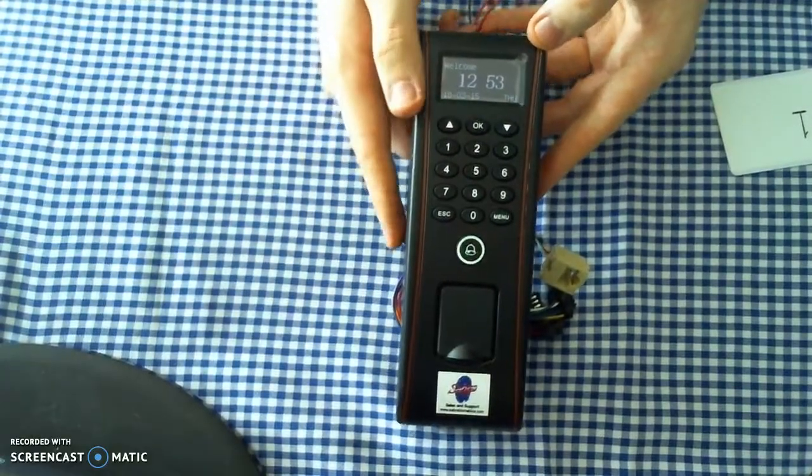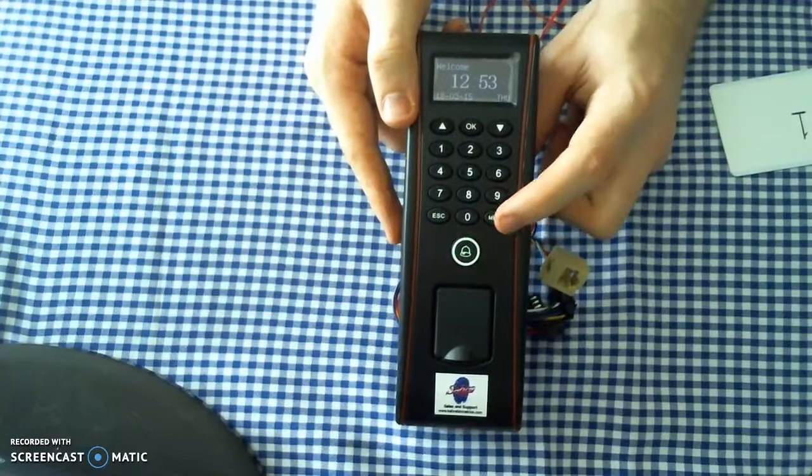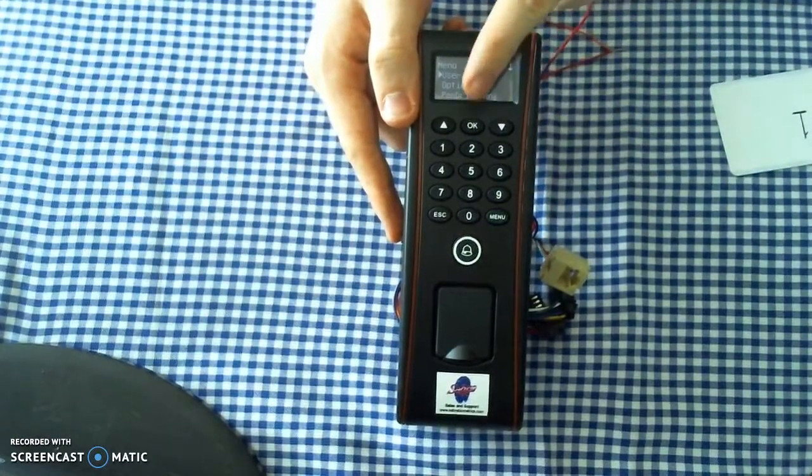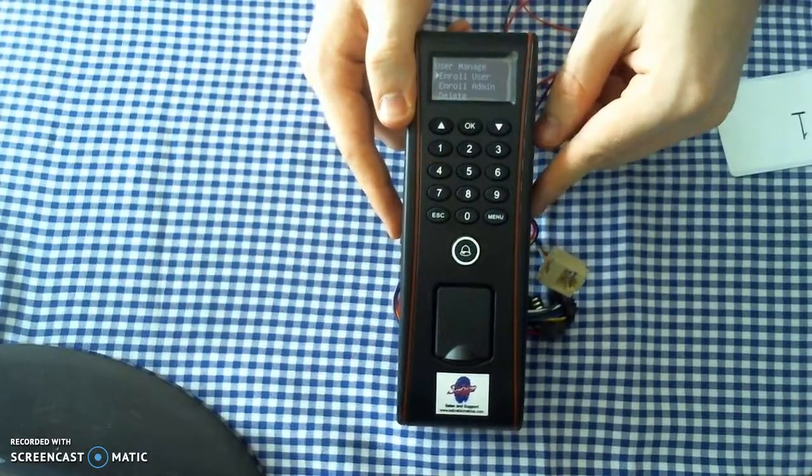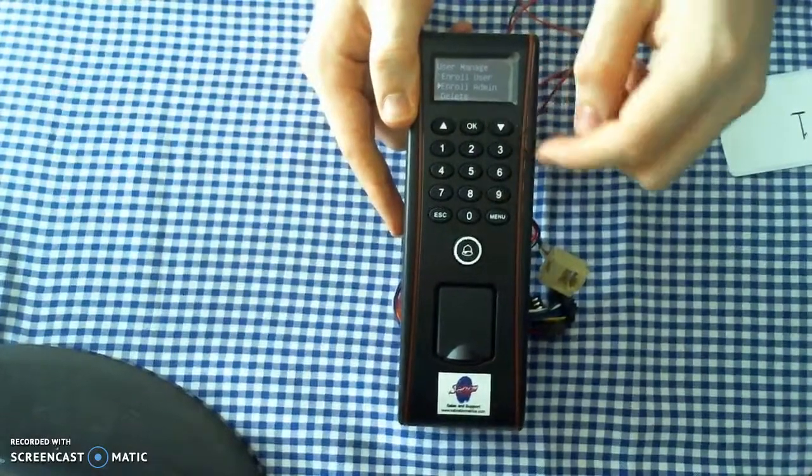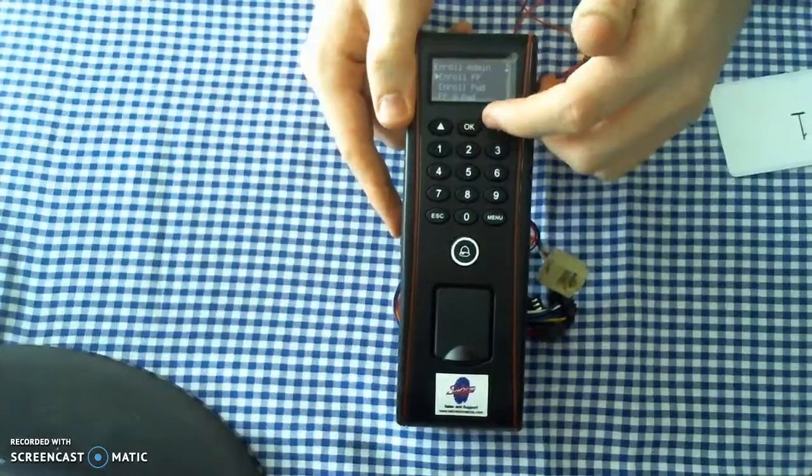So, to start things off with this device, we need to enroll an admin card. We're going to press Menu, say OK on User Manage, we're then going to say Enroll Admin, and we're going to enroll an admin card.